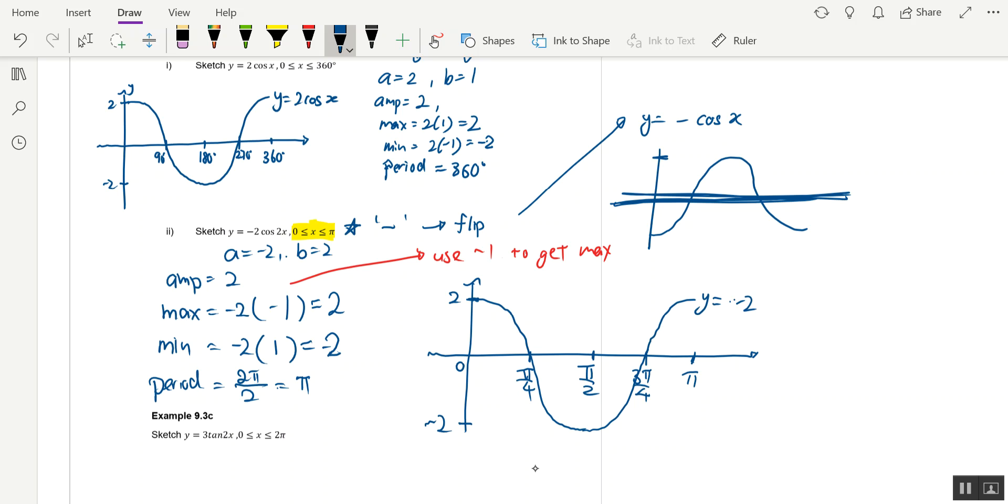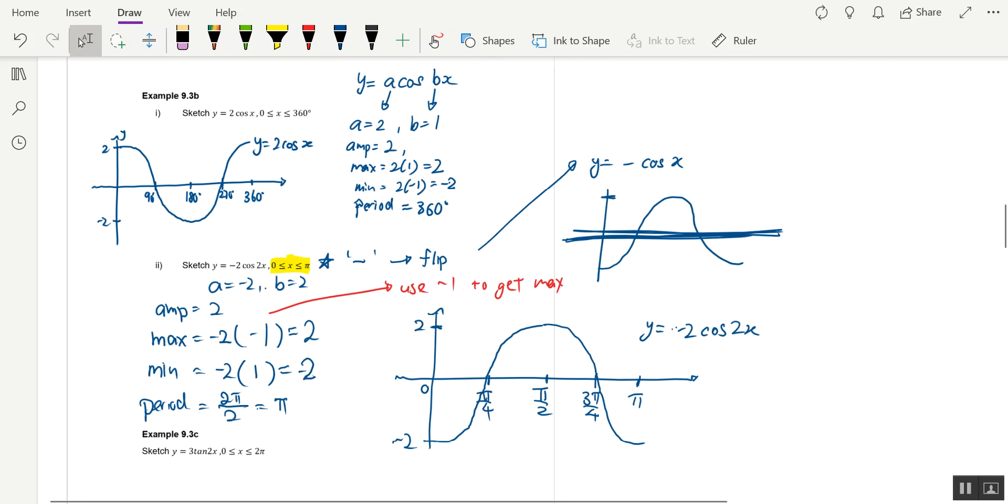Y equals to negative 2 cos 2x. And this is totally wrong because remember what we said: the graph has to be flipped. So the graph would actually look like this. When you have a negative, make sure that the graph is flipped. Original cosine graph is down to up. Now negative cosine graph is up to down.